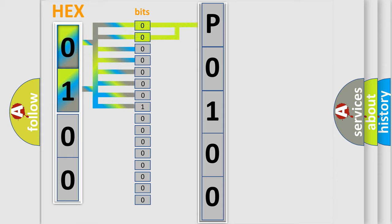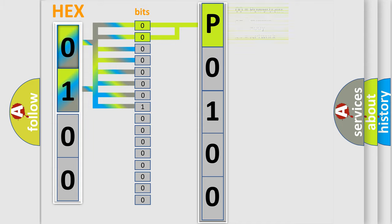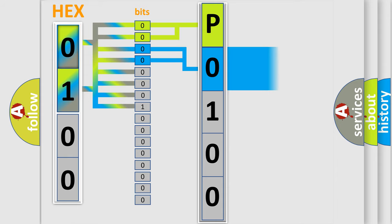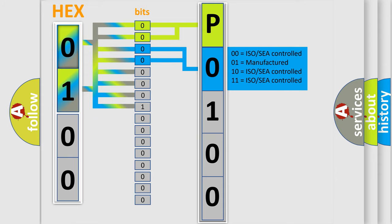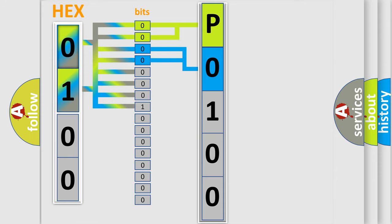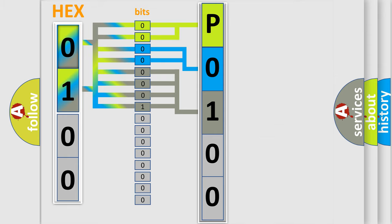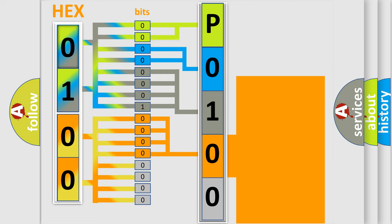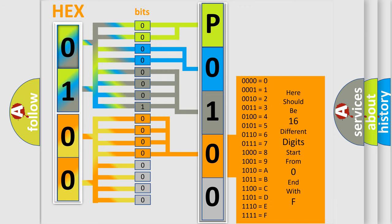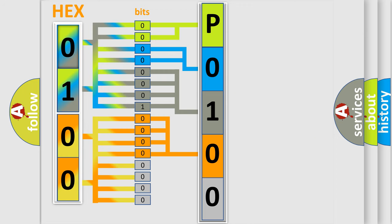By combining the first two bits, the basic character of the error code is expressed. The next two bits determine the second character. The last bits of the first byte define the third character of the code. The second byte is composed of a combination of eight bits. The first four bits determine the fourth character, and the last four bits define the fifth character. A single byte conceals 256 possible combinations.